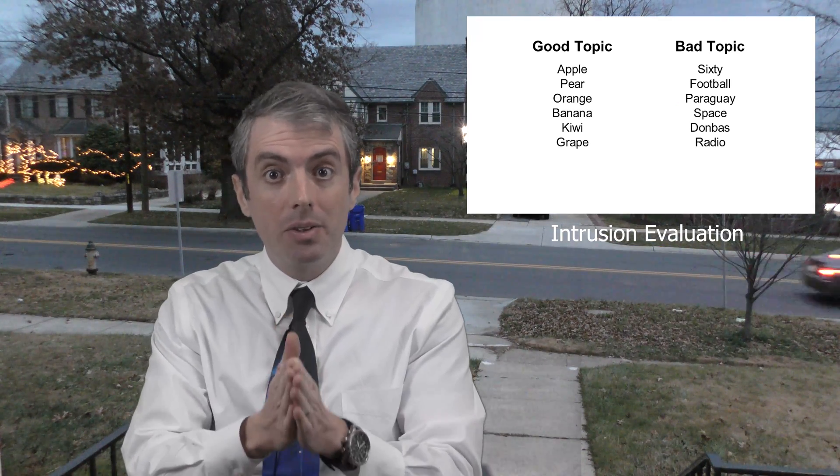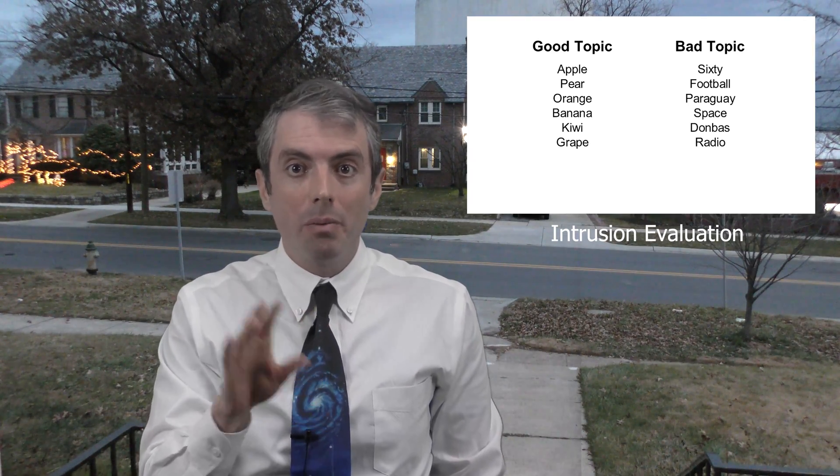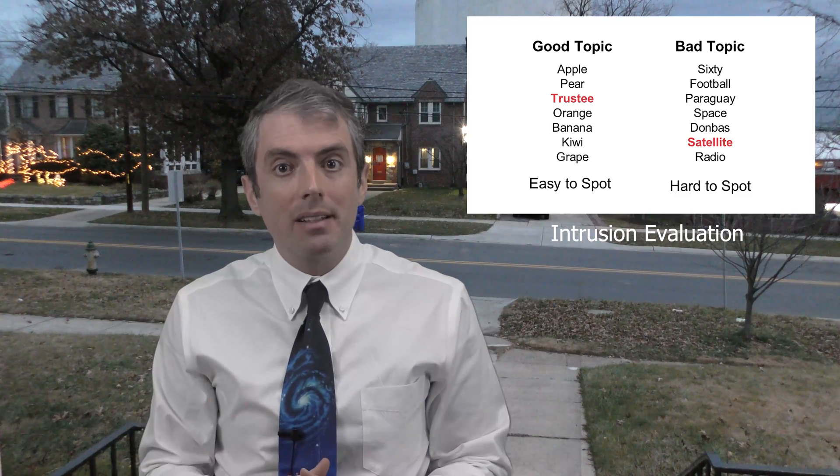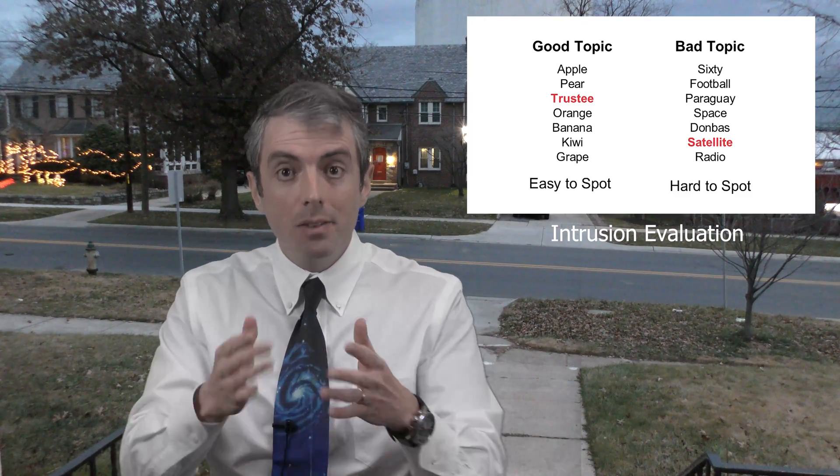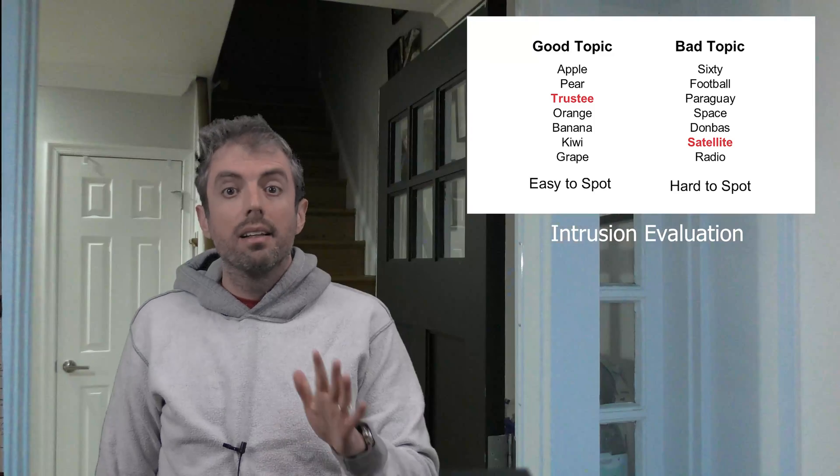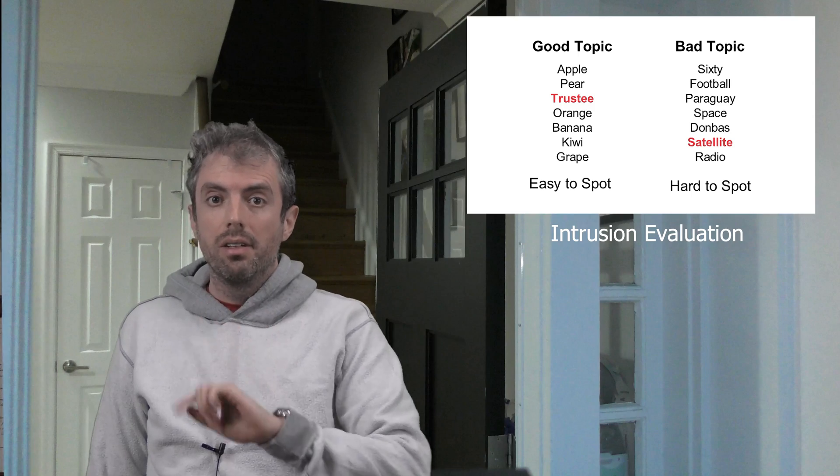What are these human judgments? A metric called topic intrusion from the Chang et al paper we mentioned before. Show somebody a topic with an intruder stuck in there, and if they can't find it, the topic doesn't make sense. This correlates with the automatic coherence metric I just showed you from Lau et al. Okay, let's assume for a minute that I agree that this is a good evaluation for a topic model. And it is! Every topic modeling paper these days does it.